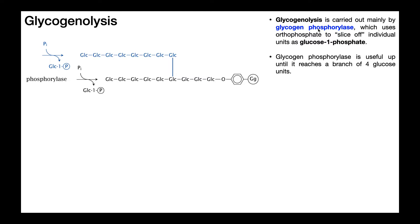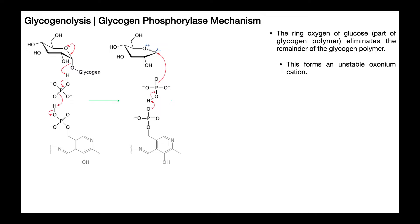Let's take a look at its catalytic mechanism to understand how it works. So right here, we have a chair conformation of glucose that is still attached to glycogen — it's still part of the polymer. The job of glycogen phosphorylase is to remove this glucose. The first step is that this ring oxygen of the terminal glucose unit of glycogen donates a lone pair and forms a double bond between this oxygen and this carbon atom. This is effectively an elimination reaction. Eliminations from organic chemistry involve double bond formation and loss of a leaving group. So when this double bond forms between the oxygen and the carbon, the entire remainder of the glycogen polymer is essentially your leaving group — a very large leaving group. When glycogen leaves as the leaving group, it's going to pick up a proton, and there's going to be a series of proton transfers.